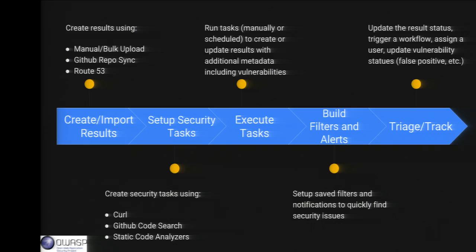Once you have your assets in Scumblr, you set up security tasks — things like using a code search to look at all your GitHub repos for sensitive strings or known anti-patterns. You can run static code analyzers like Brakeman for Rails projects or Bandit for Python projects. You can also use a curl task we've built that templates out an individual curl call made to each set of results and looks for something security-interesting. For example, scan all your web applications to see which ones have a CSP policy defined or are using the Strict-Transport-Security header. You can have tasks running manually or scheduled, keeping your information up to date.